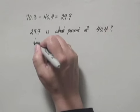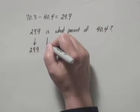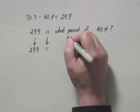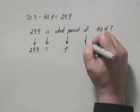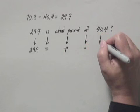Translated, that is 29.9 is what percent, we'll call P. Of is times, and 40.4.